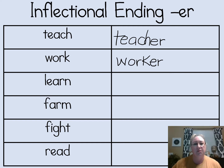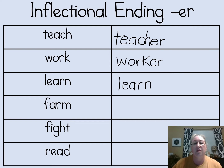Your next word is learn. Let's write learn: L-E-A-R-N. Learn is a verb — it's something you do. If we add the inflectional ending E-R to the end of the word learn, we get a noun — a person. And the word is learner. That's a person who learns.